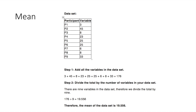How do we calculate the mean? We add up all the variables in the right-hand column — 3 plus 45 plus 8 plus 23 and so forth — which gives us 176. We then divide by the total number of variables in the data set. There are nine variables, so 176 divided by 9 equals 19.556. That's the mean, or the average, of our data.